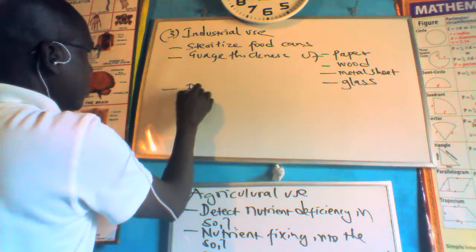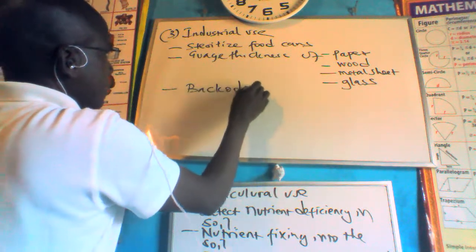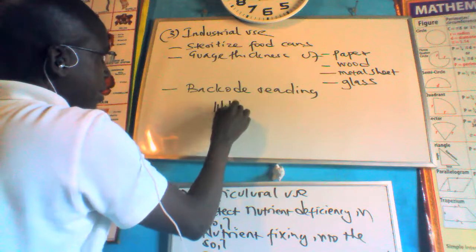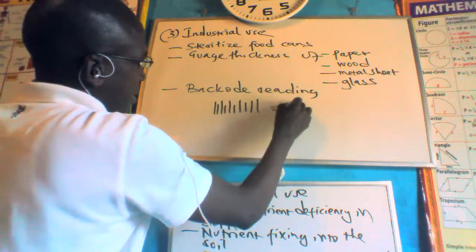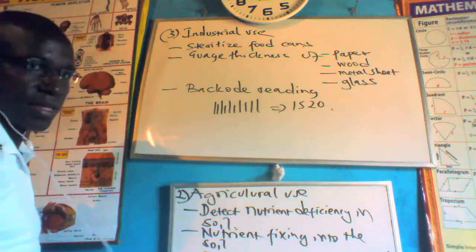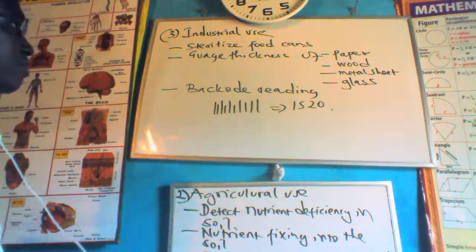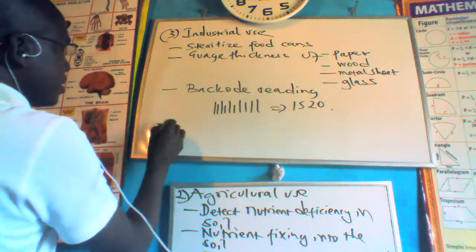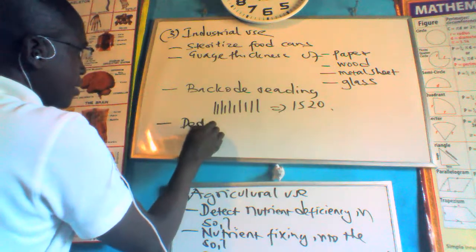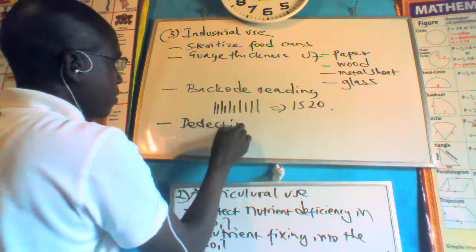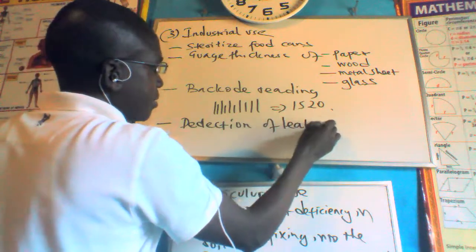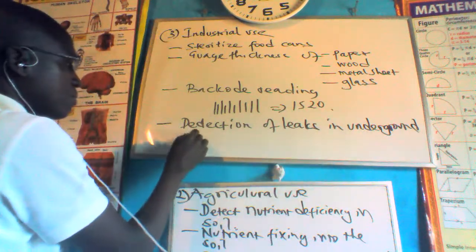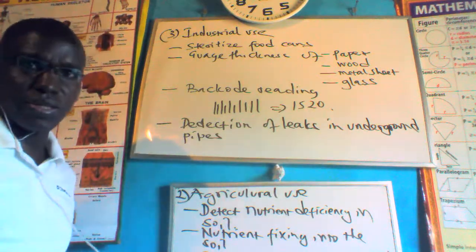We can also use it in what is known as barcode reading. In barcode reading, we find that we use symbols to quantify values like 15, 20, which are used in supermarkets. We can also use it to detect leaks in underground pipes. So those are the applications in industry.